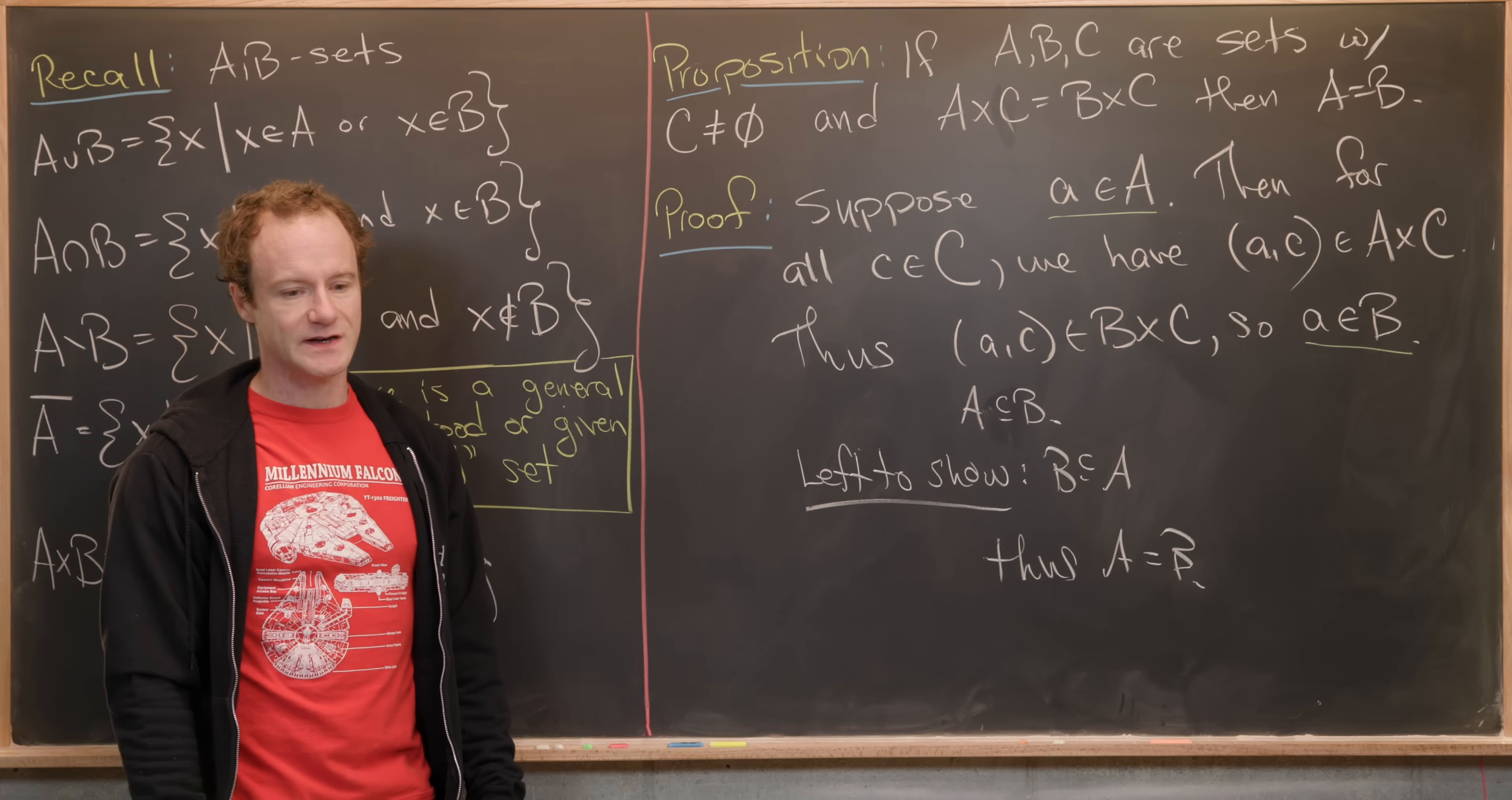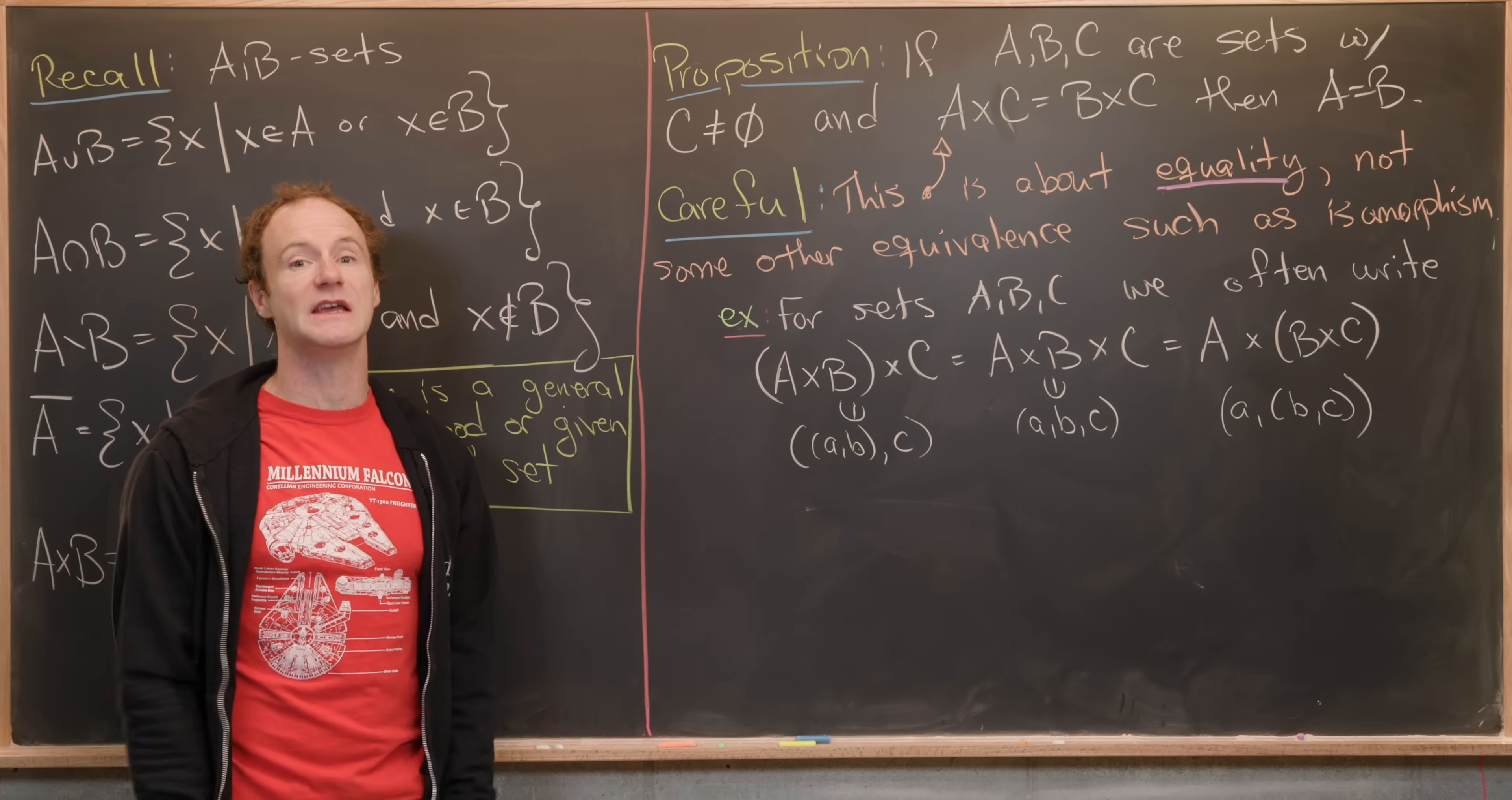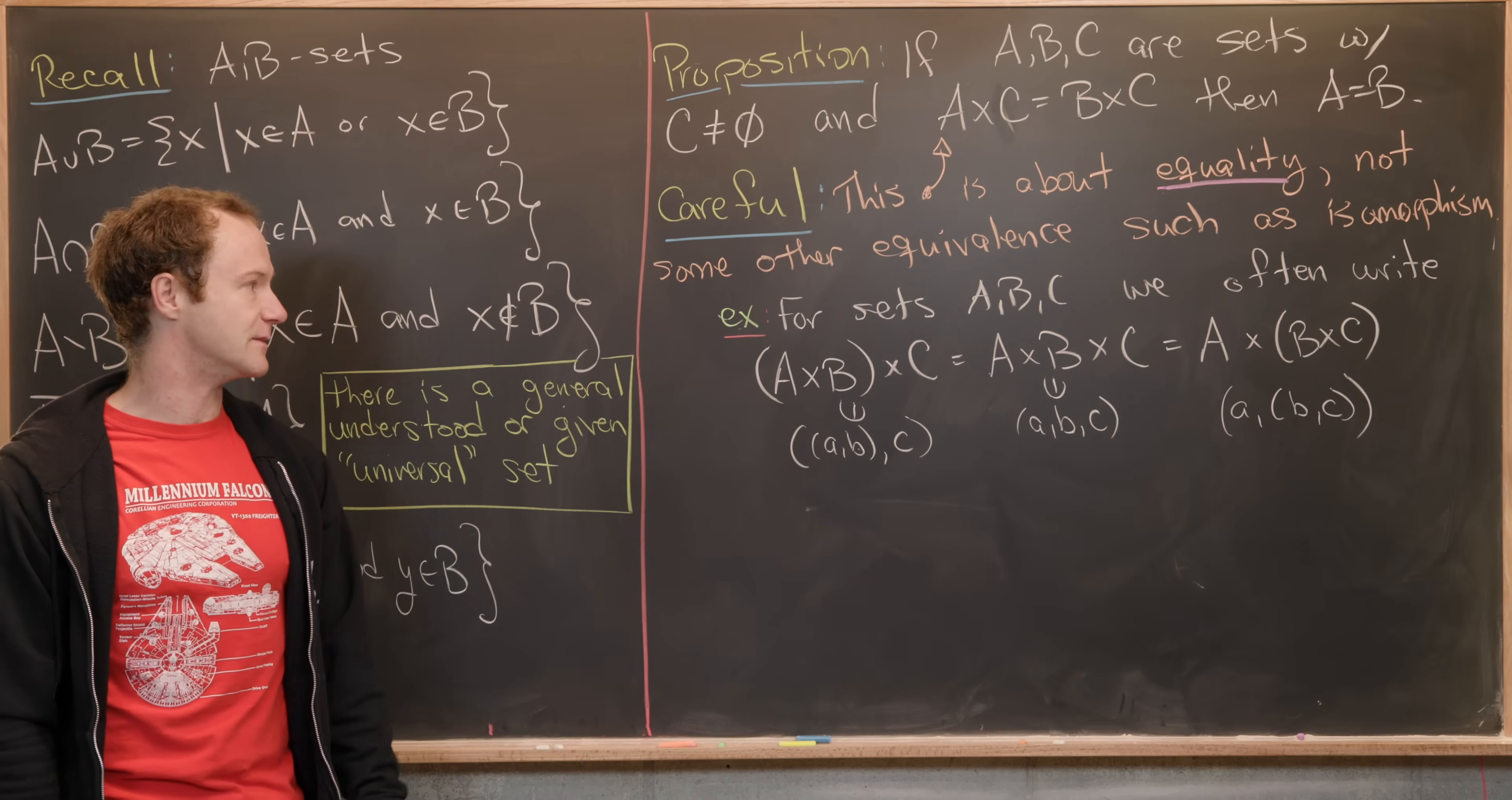Before we move on to another example, I'm going to get rid of this proof and then talk about some points of care that we need to think about involving this proof. I want to notice that this proposition is about equality, not some other equivalence, which is taken to be equality among sets. And that's sometimes known as an isomorphism, maybe in the category set. And here's a real example of the sloppiness that goes on here. This is not a really big deal in the grand scheme of things, but for little proofs like this, it does turn out to be a big deal.